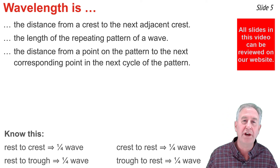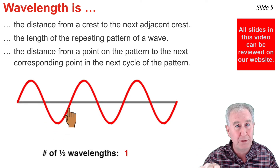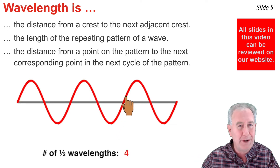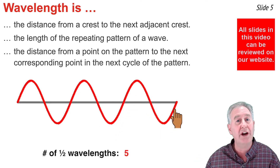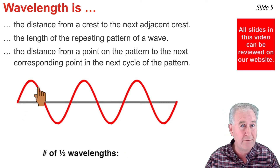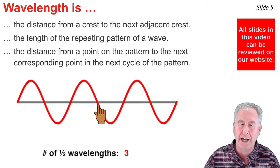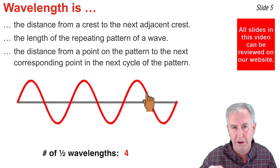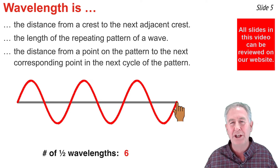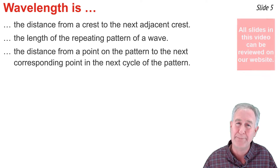Counting by half wavelengths works like this: start at rest, go up to crest, down to rest — that's a half wavelength. From rest down to trough, back up to rest — another half wavelength. Repeat, and when you're done, get the total number of half-wavelengths; six half-wavelengths times one-half equals three waves. With more practice you'll count full wavelengths, going up, down, down, up as one wave, but you need to internalize the concept of a wavelength to count waves in a pattern.